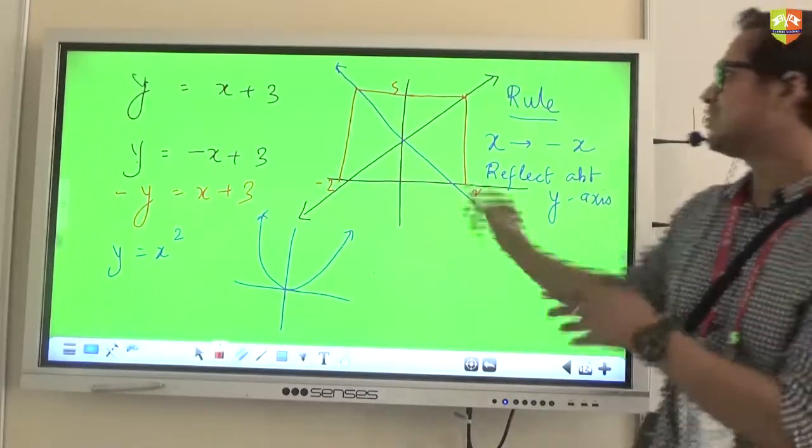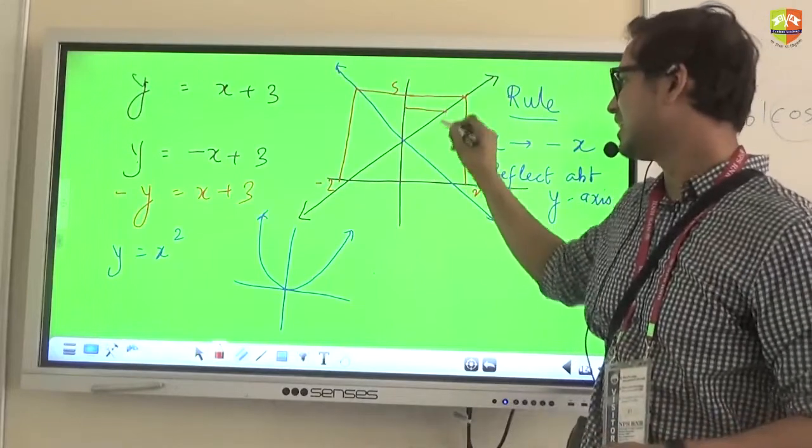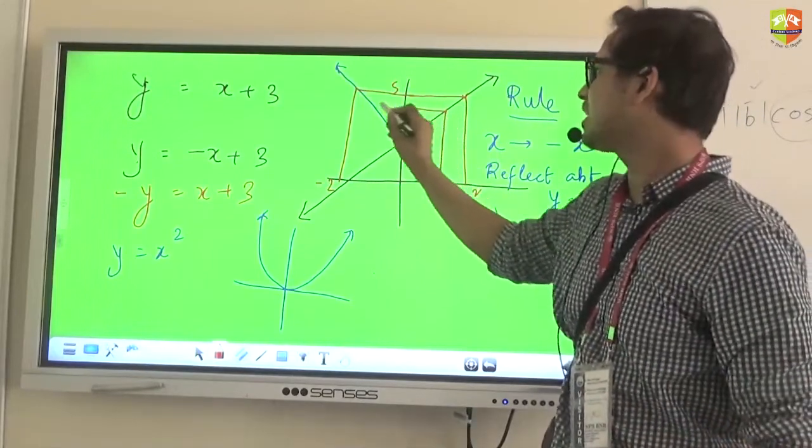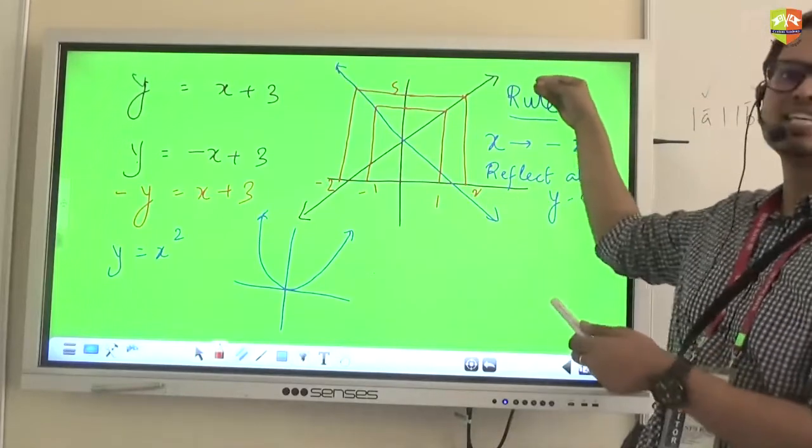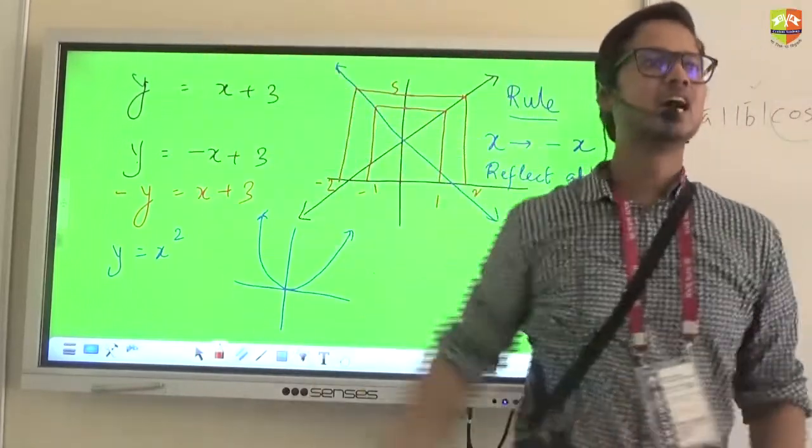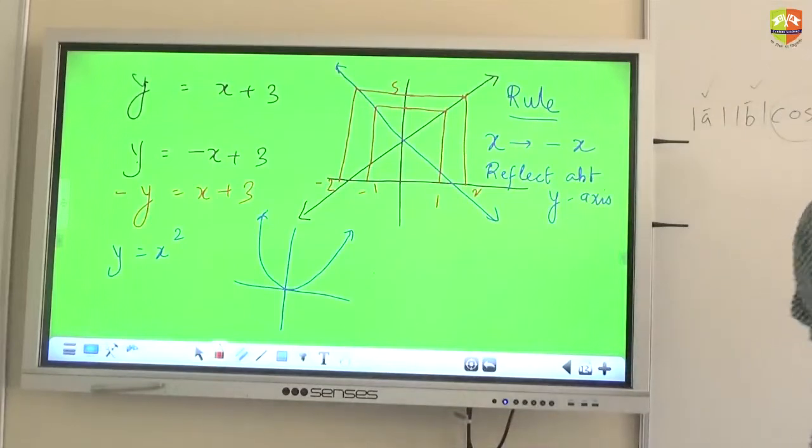then the same Y equal to 5 will now come from minus 2. Let's say 4 here came from 1. Then 4 here will come from minus 1. So it's obvious that every point is getting reflected about Y axis and hence the graph itself gets reflected about Y axis.